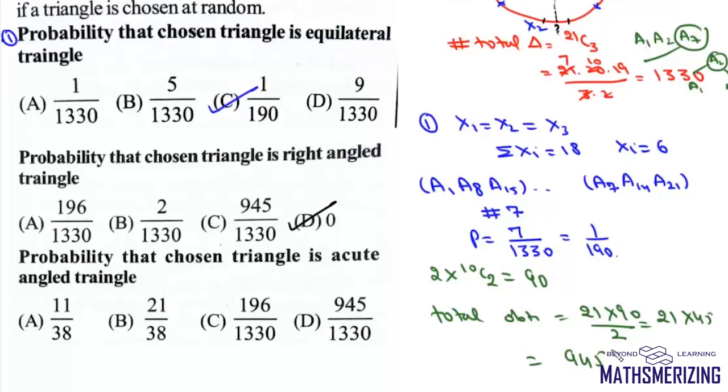So now we can find number of acute-angled triangles. Number of acute-angled triangles will be 1330 minus 945, which will be simply 385.